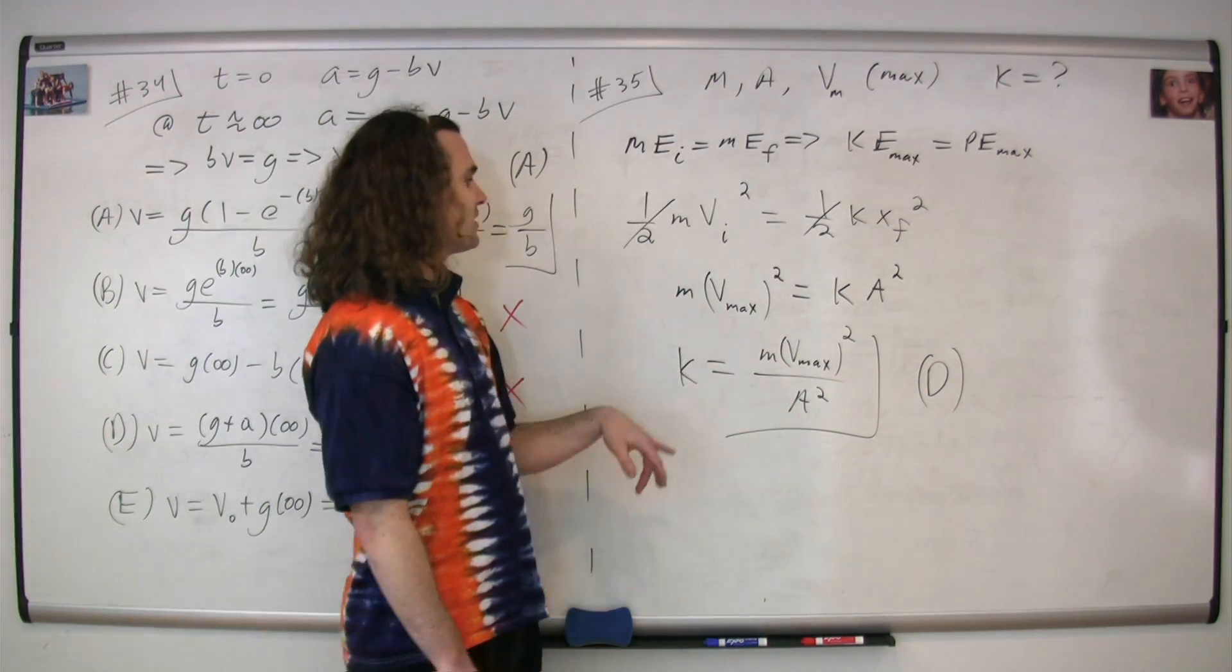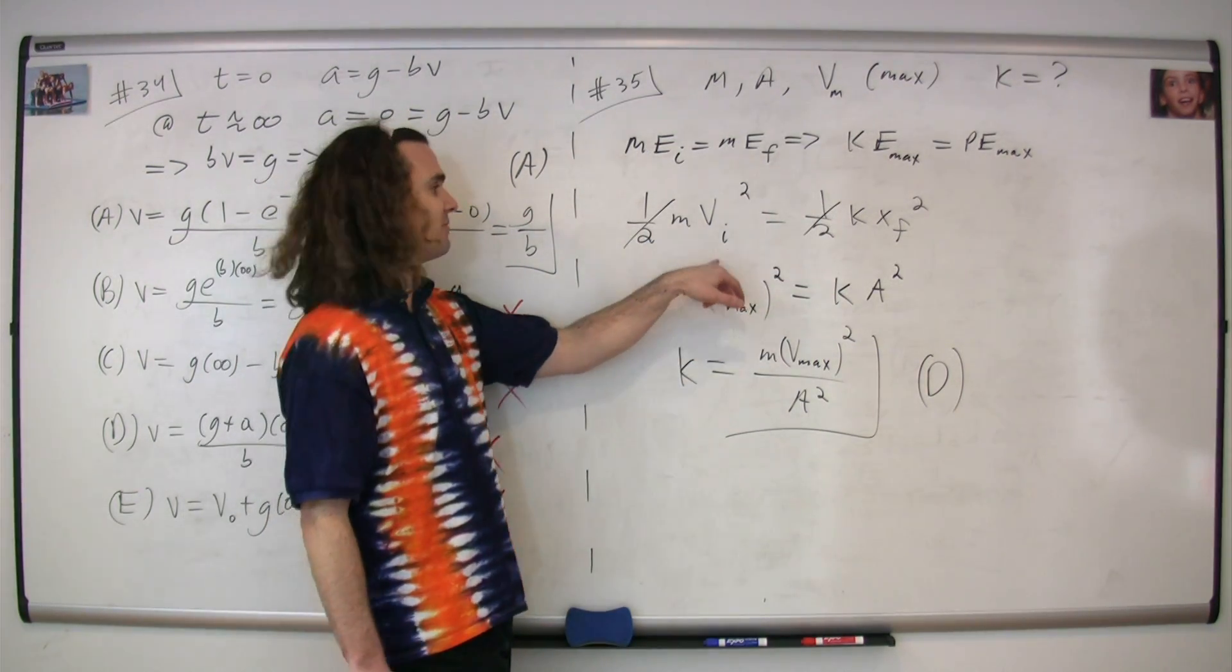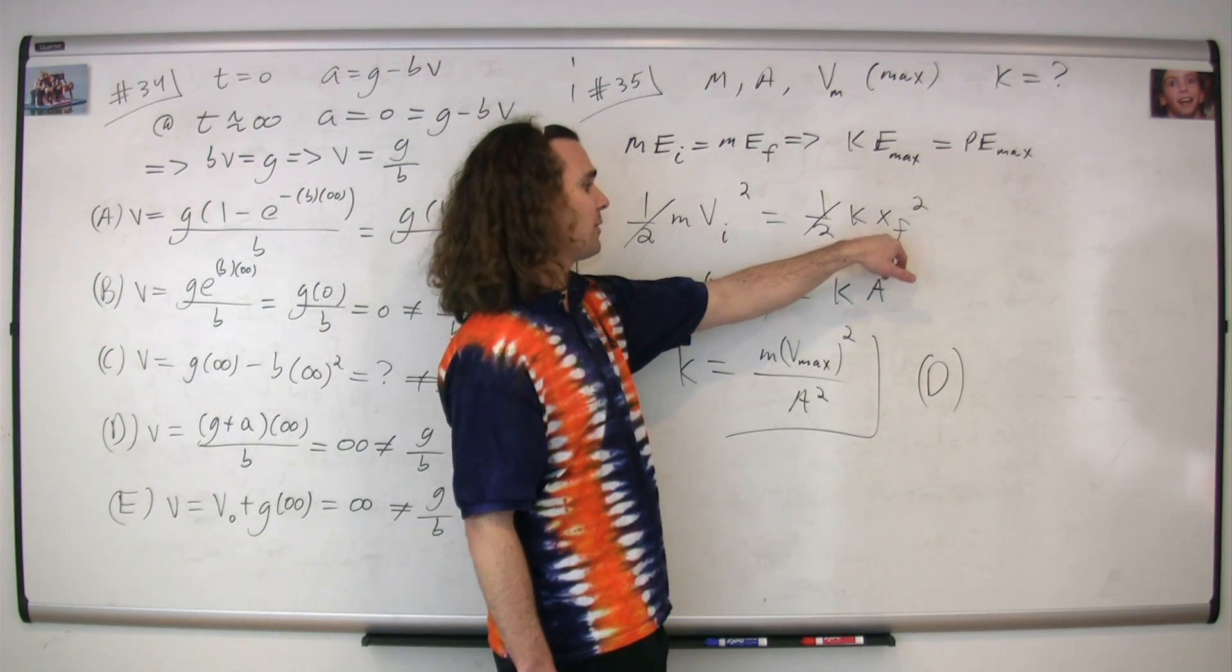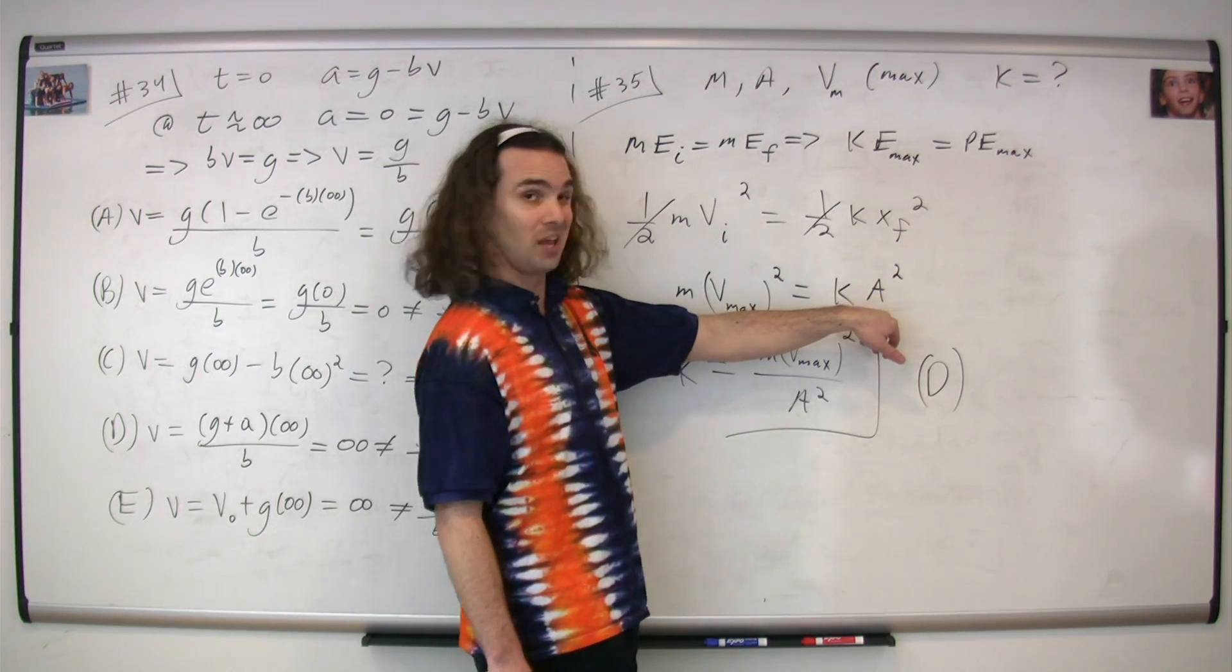You can see we can cancel out one half from both sides, we can substitute in the maximum velocity for the initial velocity and the amplitude for the final displacement from equilibrium position, or the maximum displacement from equilibrium position, the amplitude.